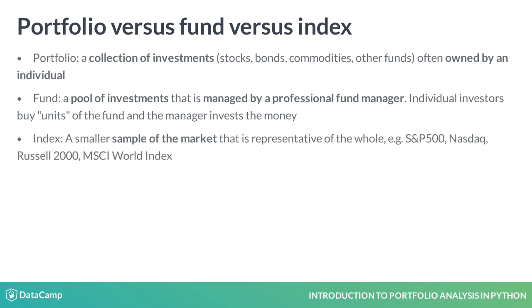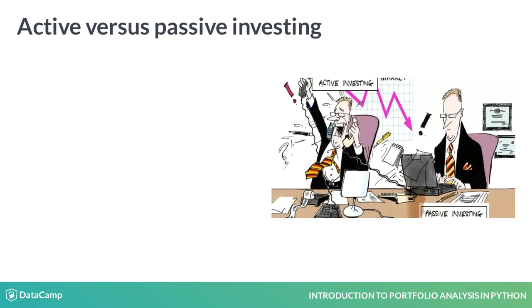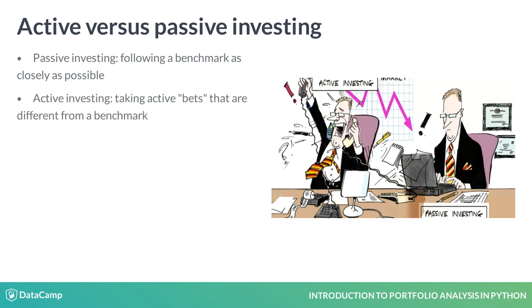Lastly, an index is a theoretical collection of assets that represents a section of the market. For example, the Nasdaq Composite Index represents US technology stocks. Let's talk about different investment styles. You might have heard about passive investing. A passive investor aims to mimic the investment holdings of a particular index and thereby doesn't try to beat a benchmark or maximize returns.